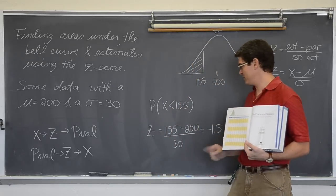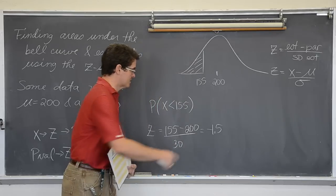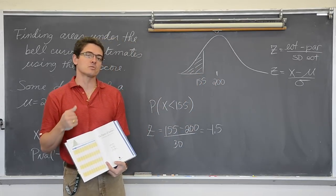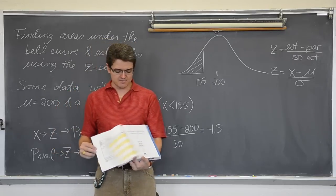My z-score is 1.5 or negative 1.5 standard deviations. It is negative because my value is to the left of the mean. Z-scores were negative to the left of the mean. Negative 1.5.